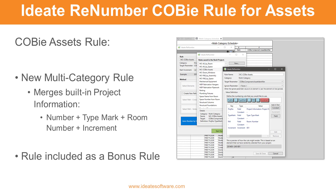COBE Assets is a new multi-category rule that merges the built-in project information number field, plus the type mark, plus the room number fields, and then an increment value. The result is then pushed into the target parameter called COBE Asset Identifier, as shown here. Modify this rule to fit your COBE required naming for assets to automatically populate this field within a multi-category schedule.